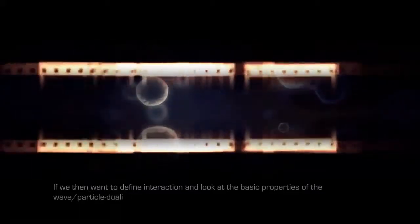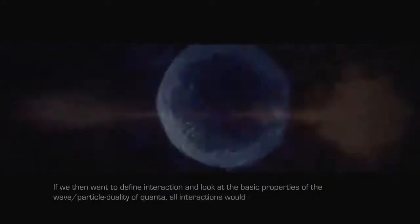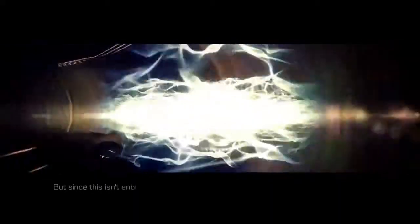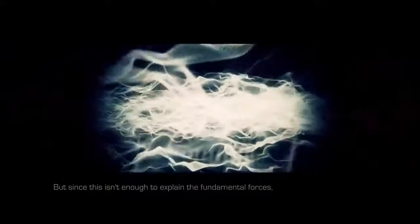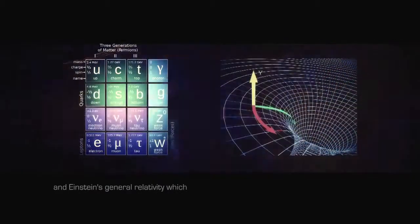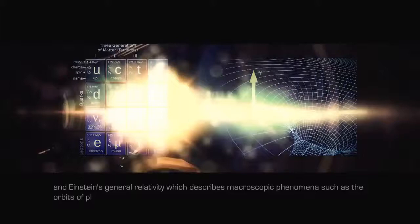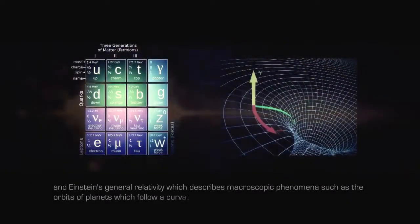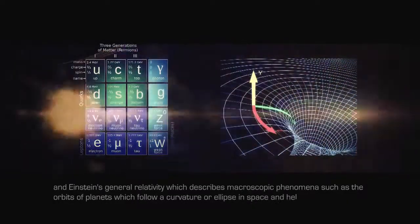If we then want to define interaction and look at the basic properties of the wave-particle duality of quanta, all interactions would consist of interference and resonance. But since this isn't enough to explain the fundamental forces, we are required to use different models. This includes the standard model which mediates the dynamics of the known subatomic particles through force carriers, and Einstein's general relativity which describes macroscopic phenomena such as the orbits of planets, which follow a curvature or ellipse in space and a helix in spacetime.